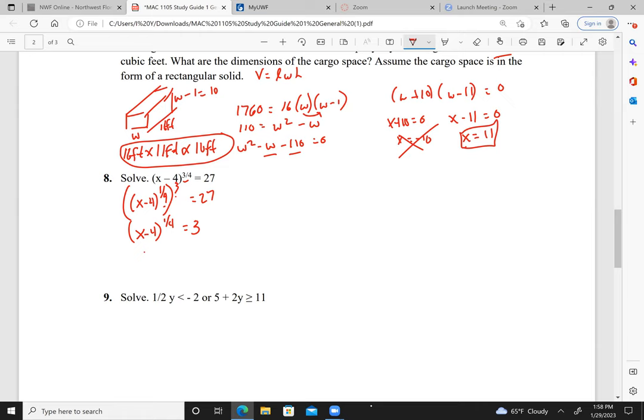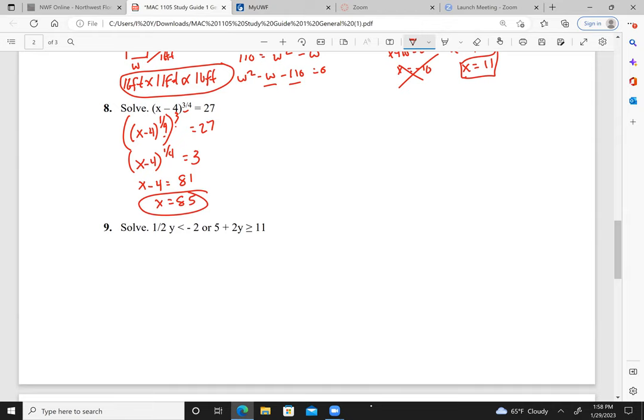Then I can take both sides to the 4th power. Then I get x minus 4 equals 81. Add 4 to both sides, I get x equals 85. Very similar to the one we did on the board.